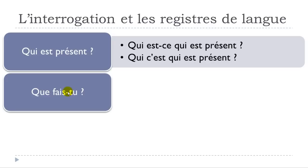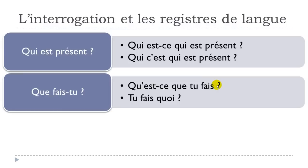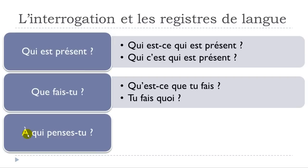Second question: the formal version is QUE FAIS-TU? — you put the verb first and then TU. The everyday version is QU'EST-CE QUE TU FAIS? — we add EST-CE QUE. And the informal spoken way is TU FAIS QUOI? — keep in mind you should raise your voice at the end to make clear it's a question.